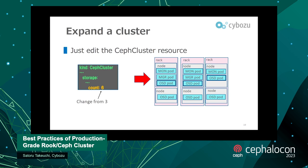To expand the cluster, surprisingly, it's just editing the CephCluster resource. The count field means the number of OSDs. If the previous value is three and we want to add three more OSDs, just increment the value from three to six. The OSD pods and corresponding OSDs are created and also spread evenly over racks and nodes.